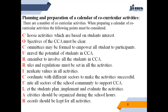When preparing a calendar of co-curricular activities, the following points must be considered. Number one, choose activities based on students' interest. Number two, objectives of the co-curricular activities must be clear. Number three, committees may be formed to empower all students to participate. Number four, unravel the potential of students in CCA. Number five, remember to involve all students in CCA. Number six, rules and regulations must be set in all activities.